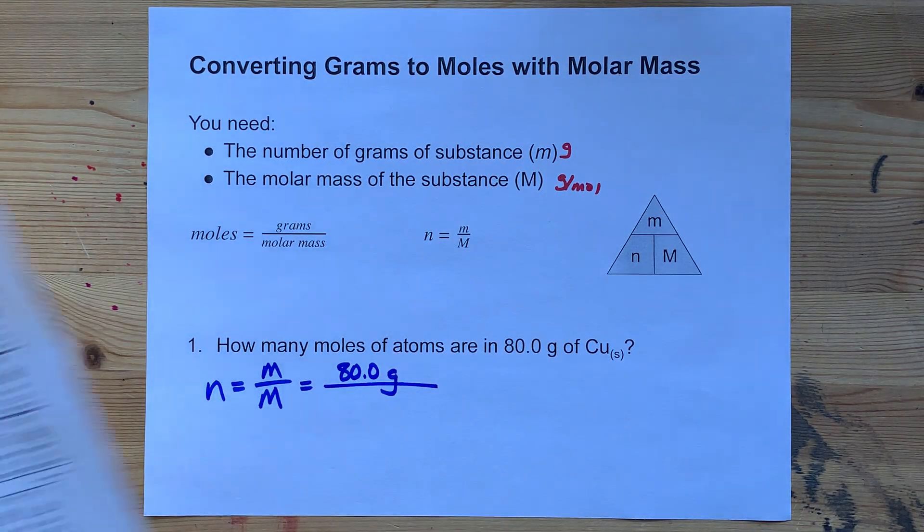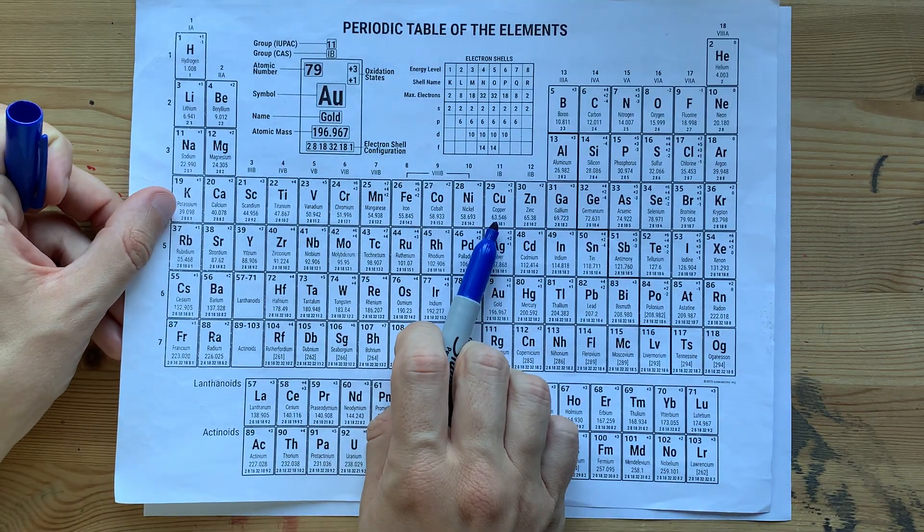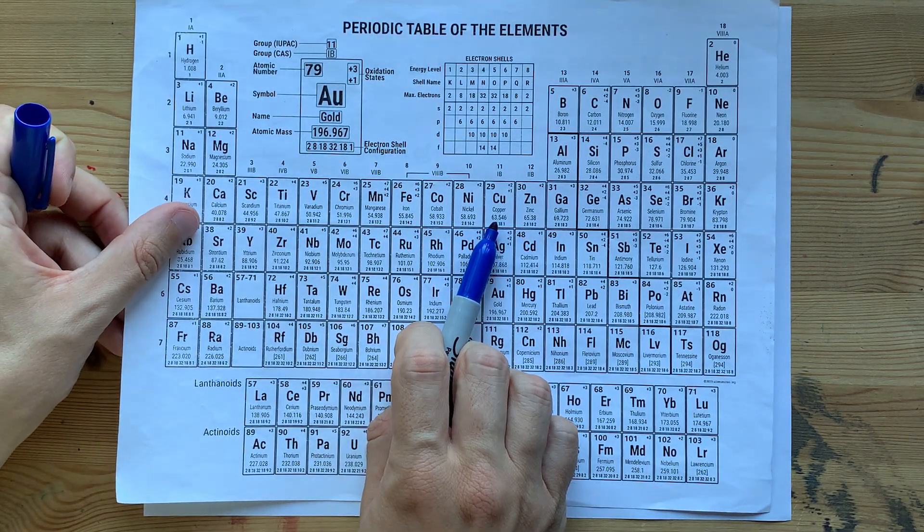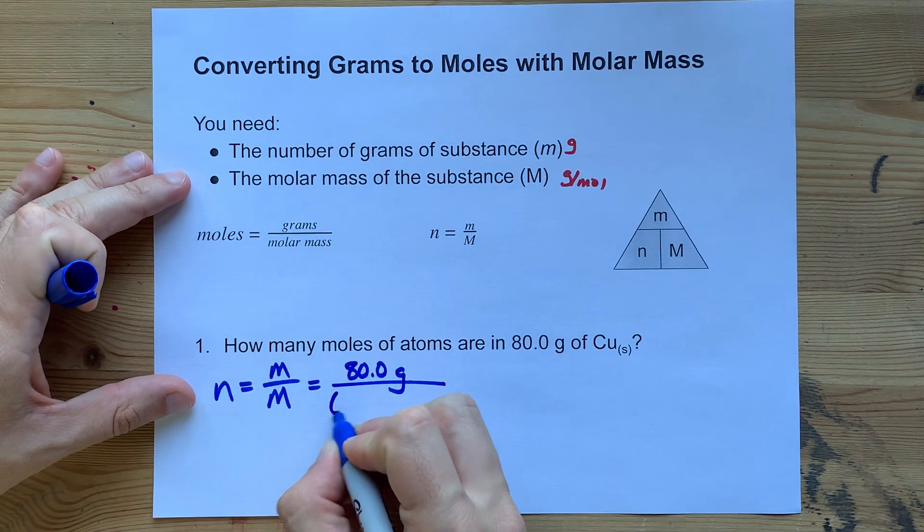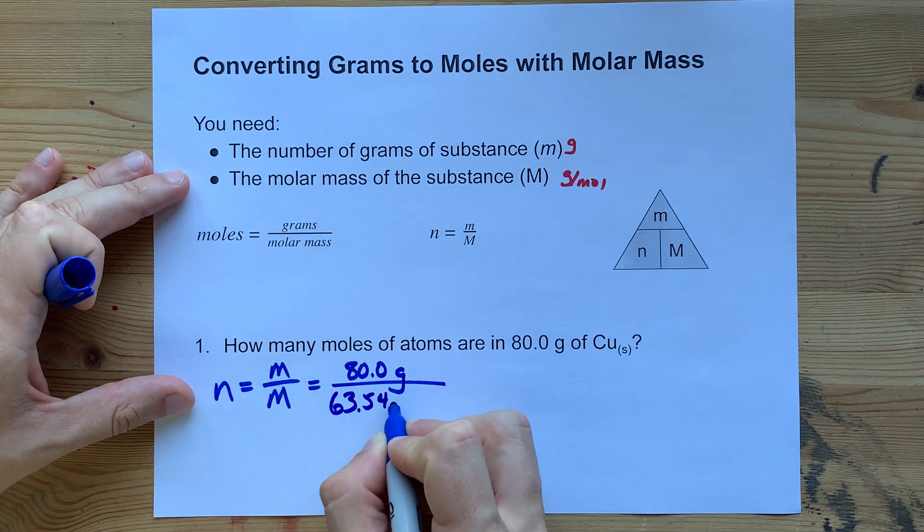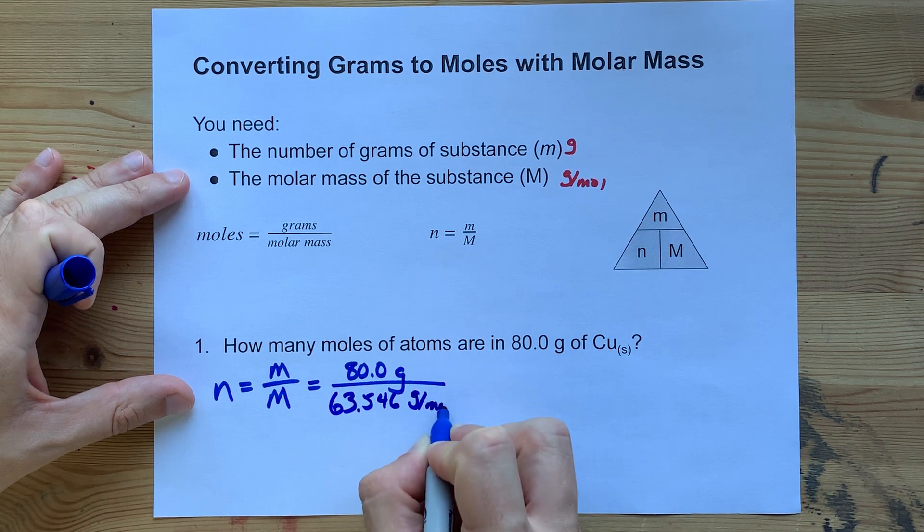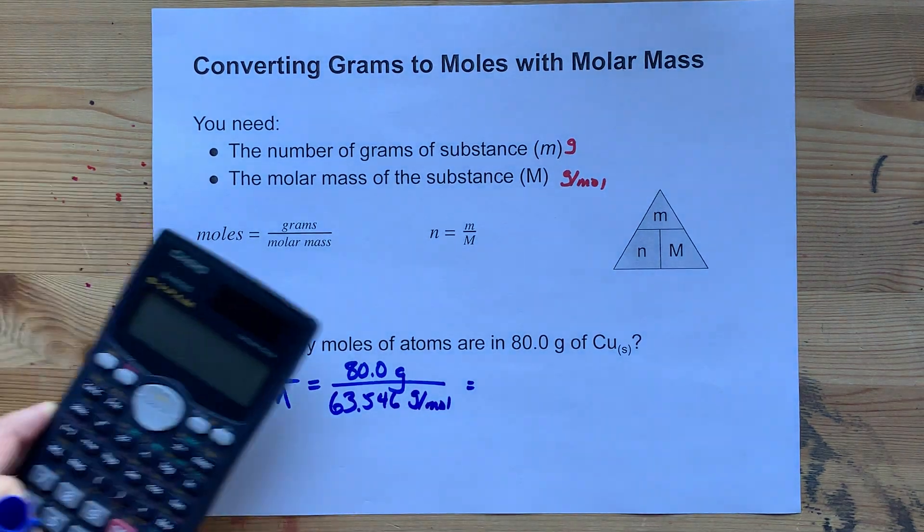The molar mass capital M is read from the periodic table. For pure elements like copper, it's 63.546 grams per mole. All you'll need to do is do that on your calculator.